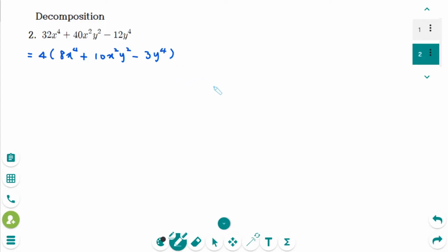Then use substitution. Let x squared be large A and y squared be large B. It becomes 8A squared plus 10AB minus 3B squared.